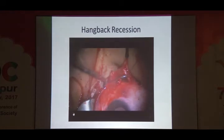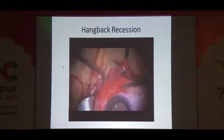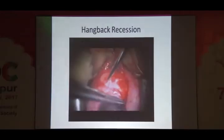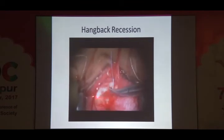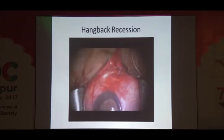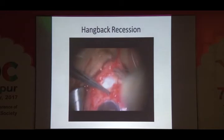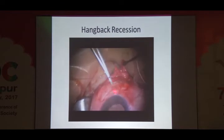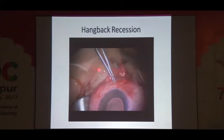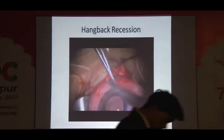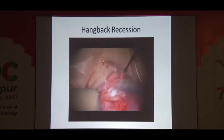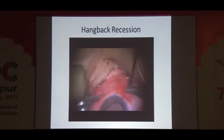You can also sometimes do a hangback recession, where for some reason you are not able to pass sutures through the sclera at the point where you want to reinsert them — perhaps there is a band, fibrosis, or the sclera is very thin. Then you pass the sutures through the original insertion and the muscle hangs back from those sutures, inserting over time at approximately the pre-decided place. The knot is being tied up, with the assistant holding the area already marked in millimeters. You should take a double or triple knot here. This is a hangback recession.